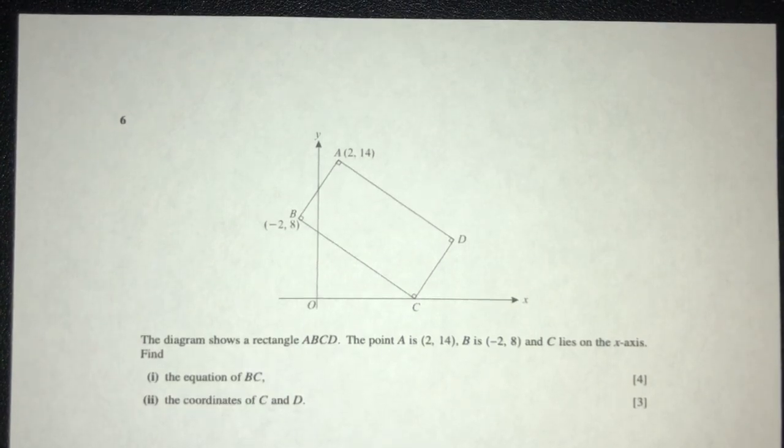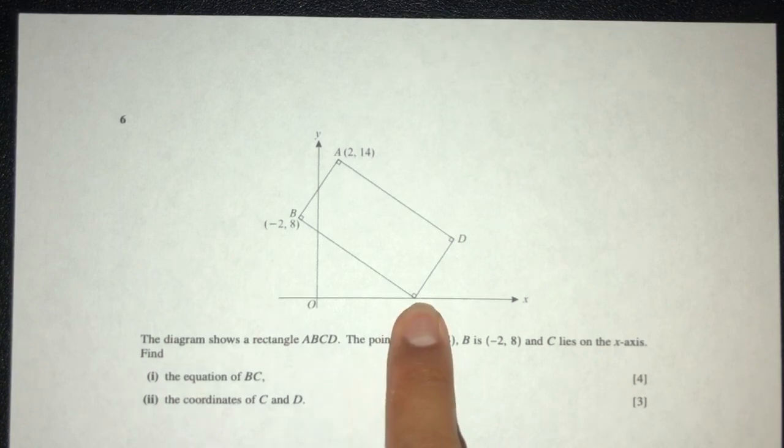Let's move on to the next question. The diagram shows a rectangle ABCD. The point A is (2, 4), the point B is (-2, 8), and C lies on the x-axis. Okay, as we can see here.